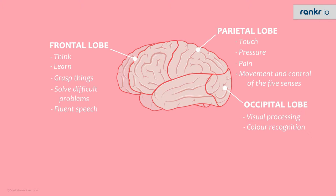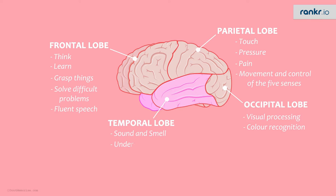Lastly — did you hear that sound? That is because your temporal lobe is performing its activities appropriately. It is associated with recognition and interpretation of sound and smell. It helps us understand speech — you wouldn't have been able to comprehend what's being said in this video if there was something wrong with your temporal lobe. It is also responsible for visual and verbal memory.